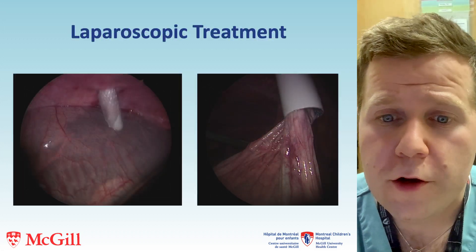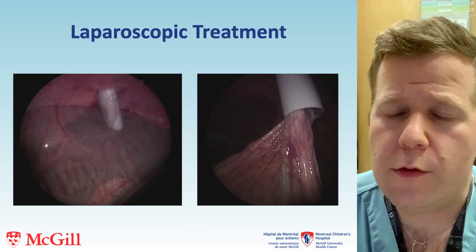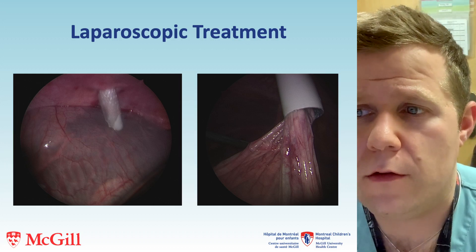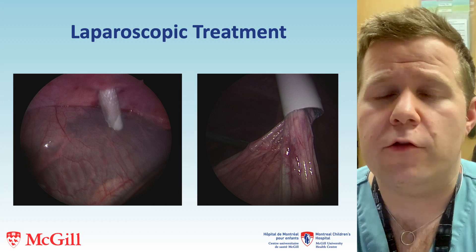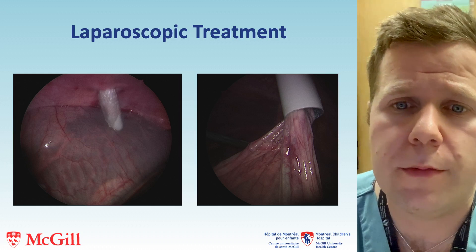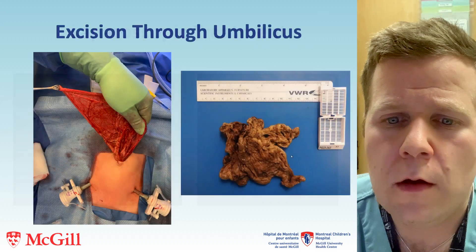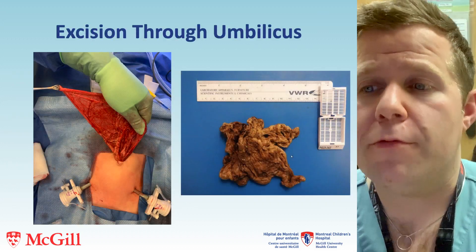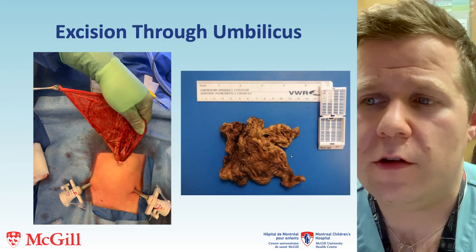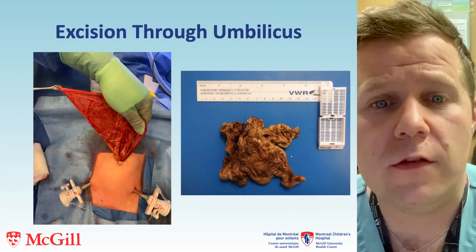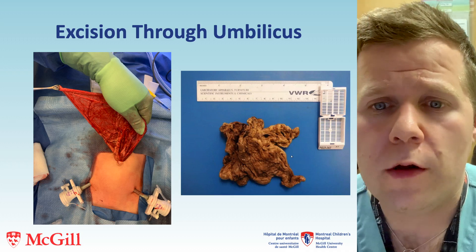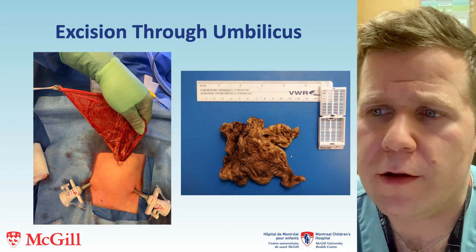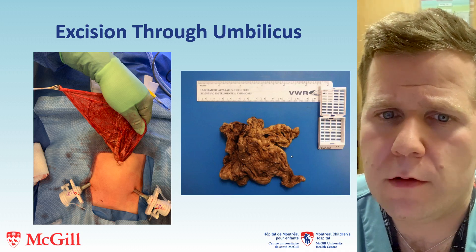With an omental cyst it is safe to proceed with laparoscopic drainage of the cyst to facilitate extirpation through the umbilical trocar site. When the drained lesion was brought out through the umbilical incision, it consisted of a thin-walled cyst which contained hemorrhagic fluid and necrotic fragments of omentum.